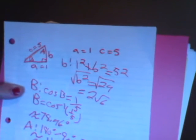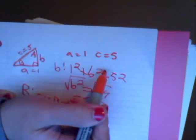We're going to try to solve the triangle if possible. We start off with the given values: A equals 1 and C equals 5.